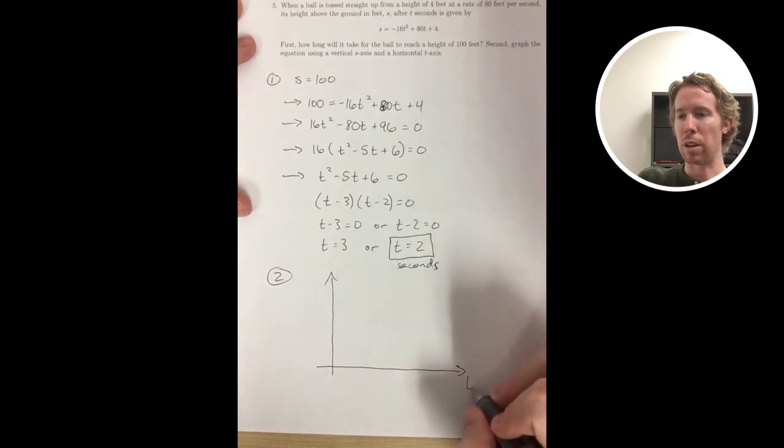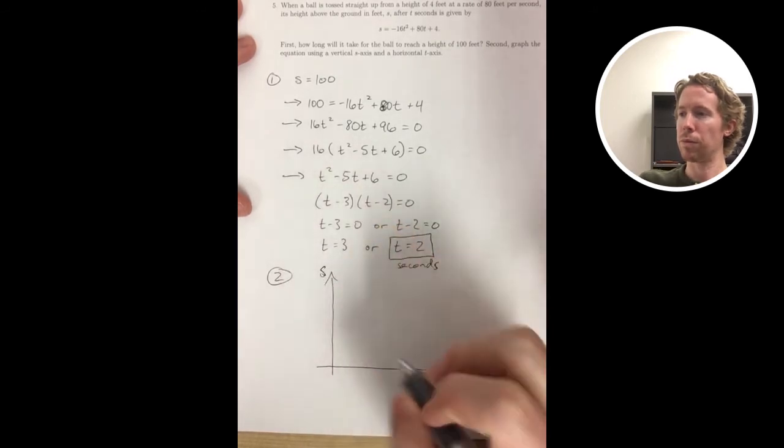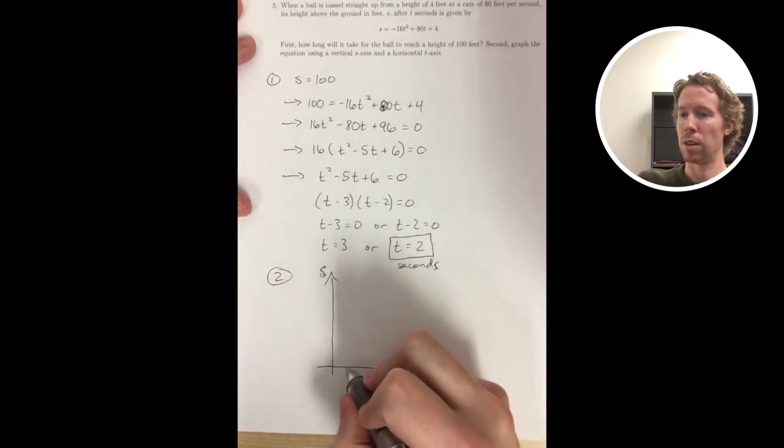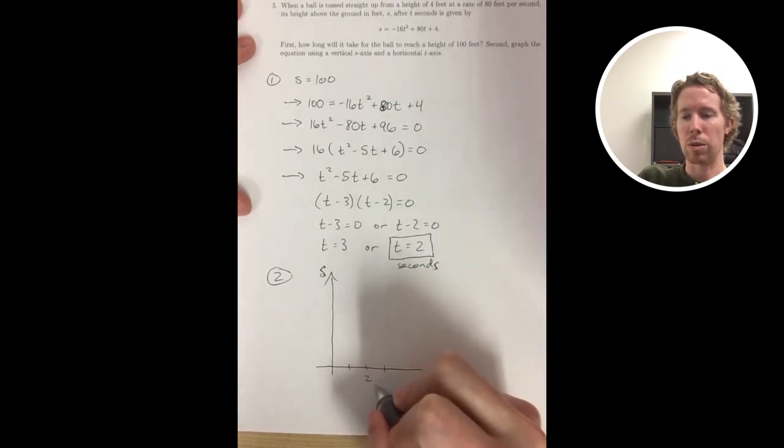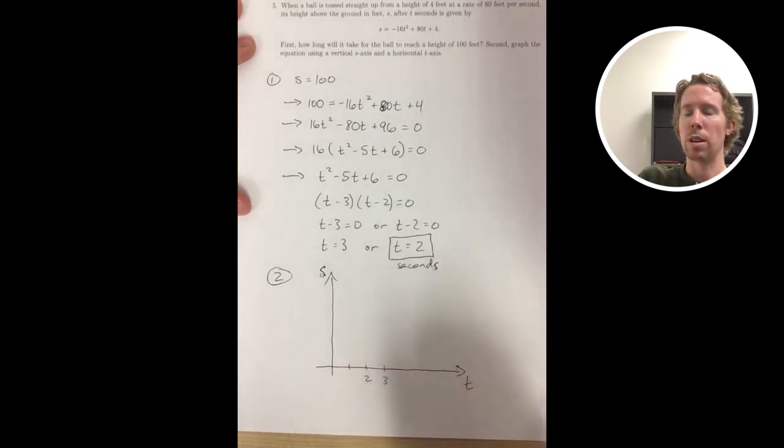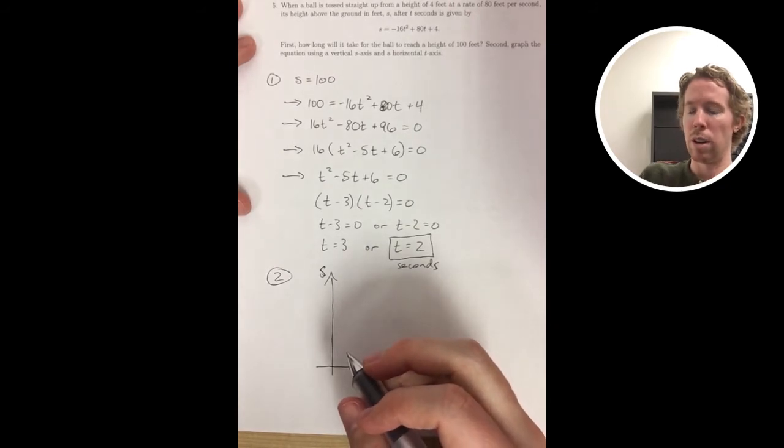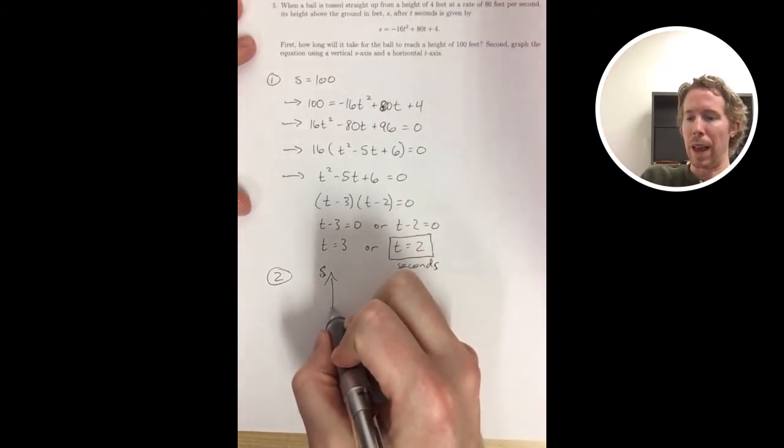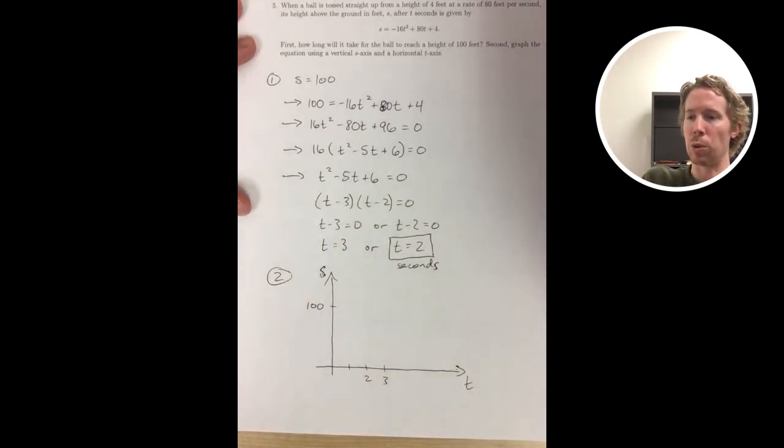And then when we graph it, we already know it's going to be a parabola. We know several points on the graph. We know that when t equals 0, the height is 4. You can just plug in t equals 0 to find s equals 4. And then we know at t equals 2 and at t equals 3 the height is 100, so we can plot those points.